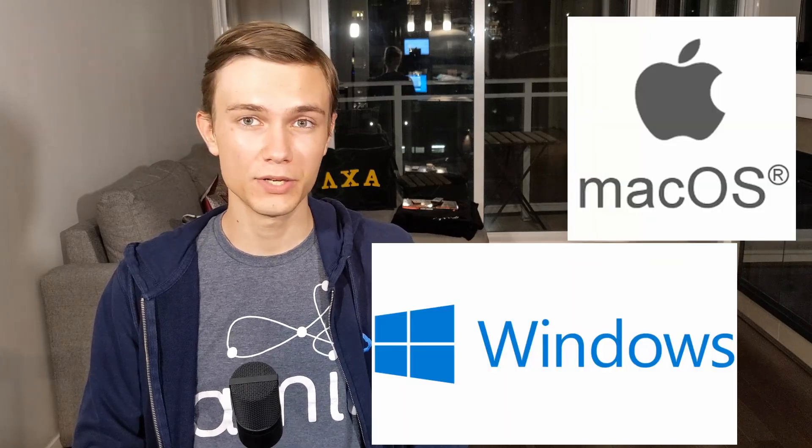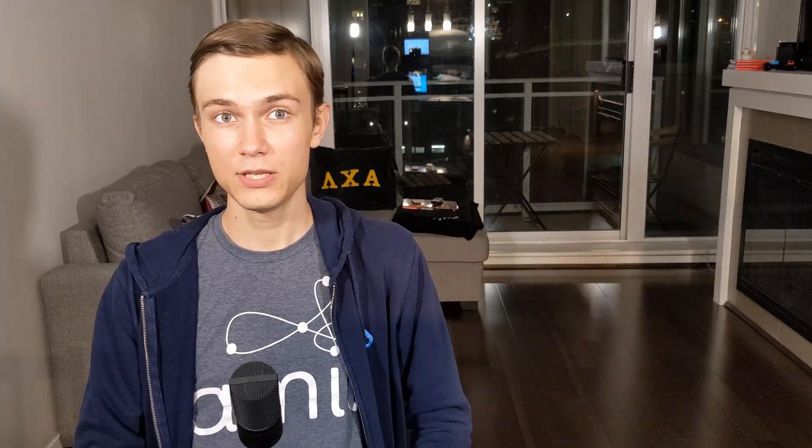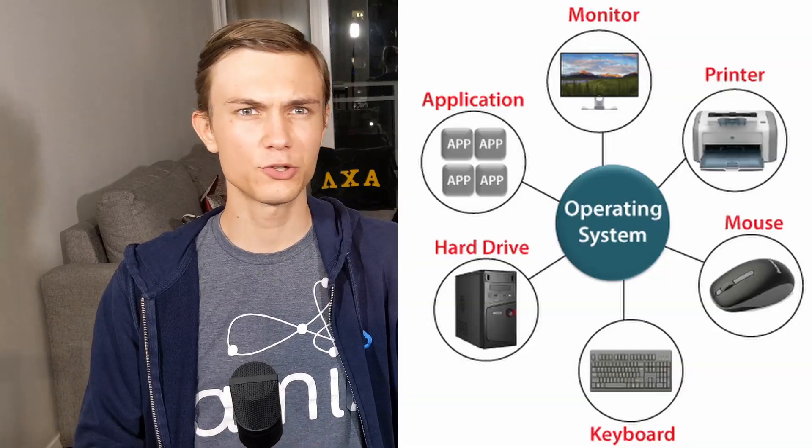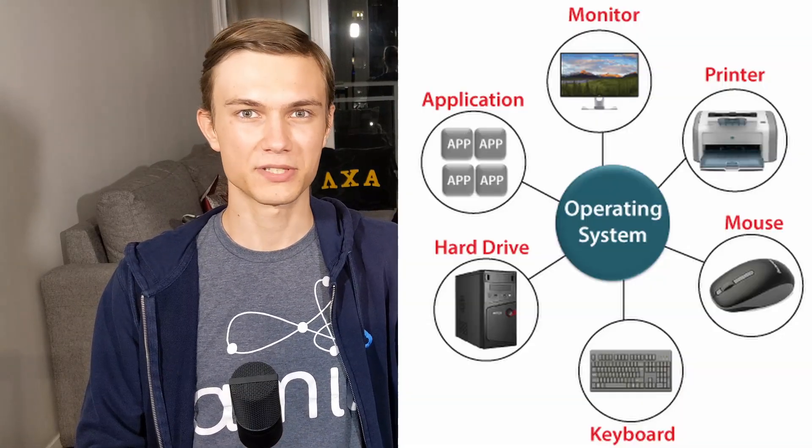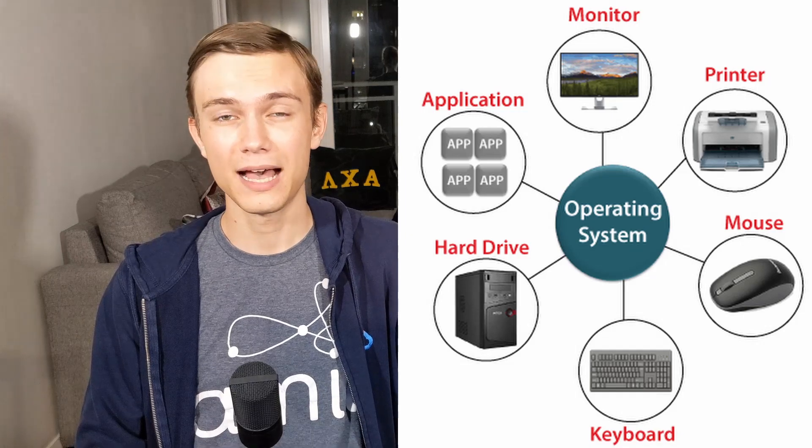Anyways, this introduction took too long already, so let's get going right away. An operating system is a set of software that provides all the necessary infrastructure to make your computer actually useful. The most famous examples are macOS and Windows. These operating systems come with a lot of built-in software to manage your peripherals, run your programs, manage your computer's power states, manage your file system, and a lot more.